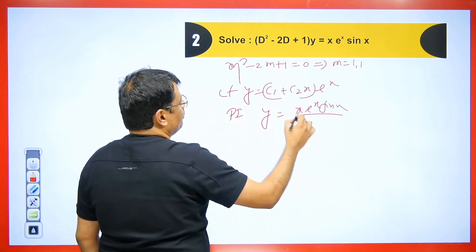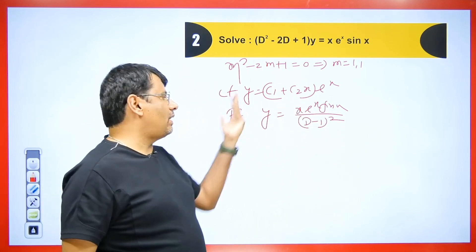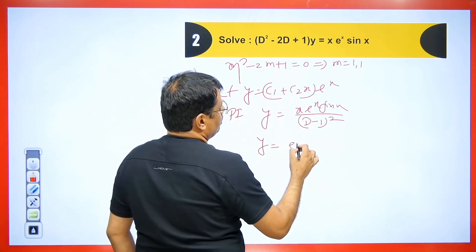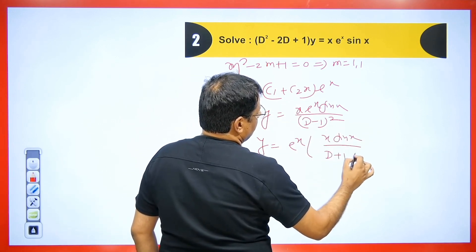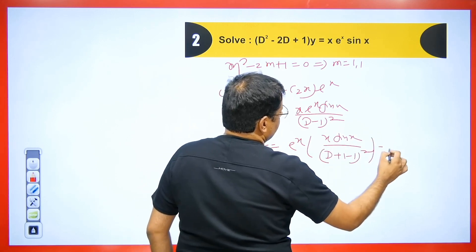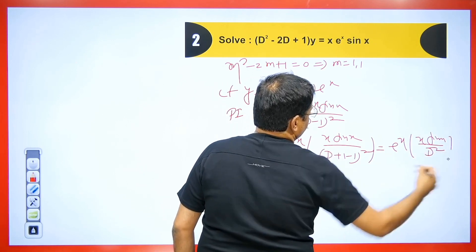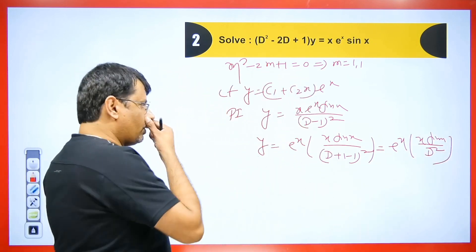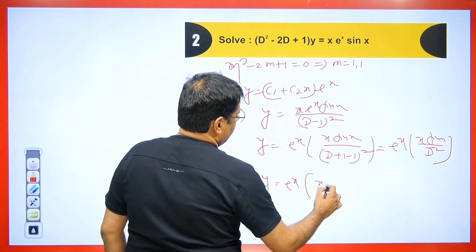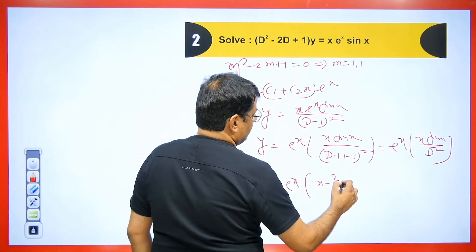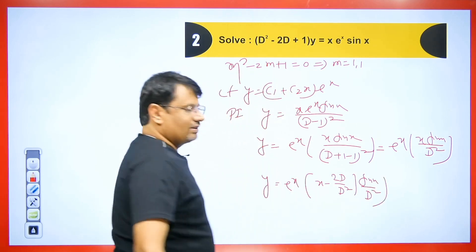We take eˣ outside. When you take eˣ outside, D is replaced by (D+1), so it becomes (D+1−1)², which simplifies to D². So PI = eˣ · [x·sin(x)/D²]. You can apply the old formula: eˣ · [x − f'(D)/f(D)] · sin(x)/D². We know this becomes eˣ · [x − 2D/D²] · sin(x)/D², i.e., eˣ · [x − (2/D)] · sin(x)/D².